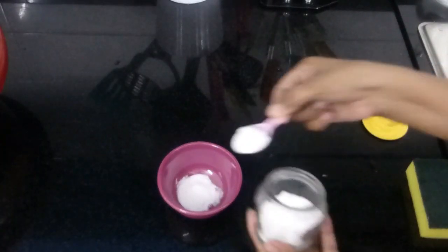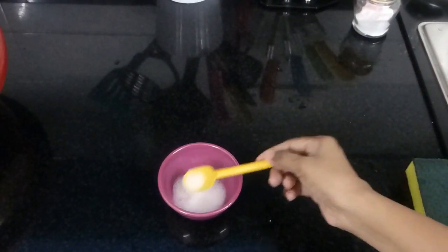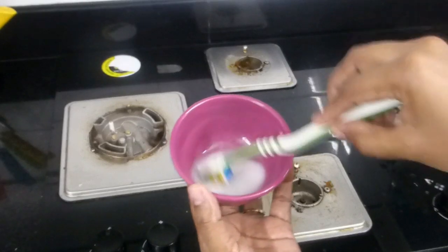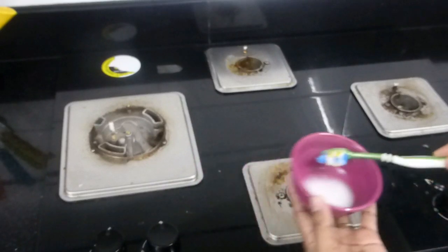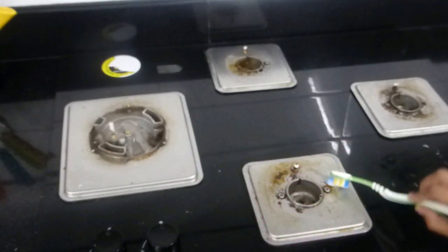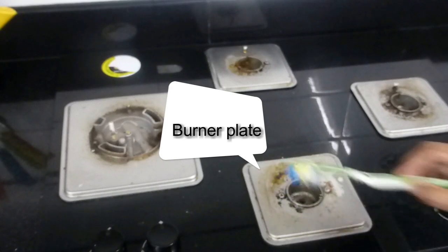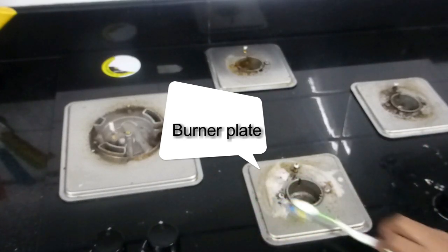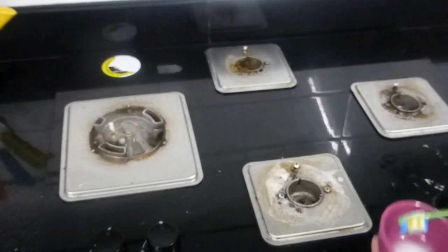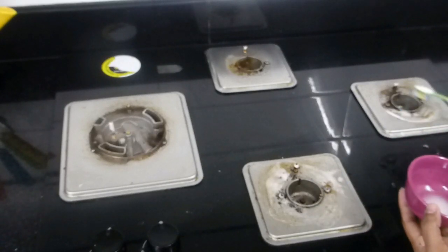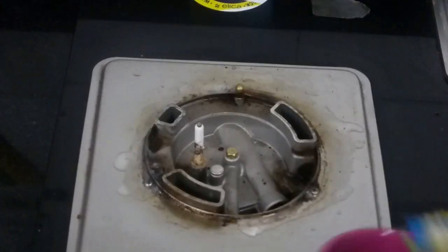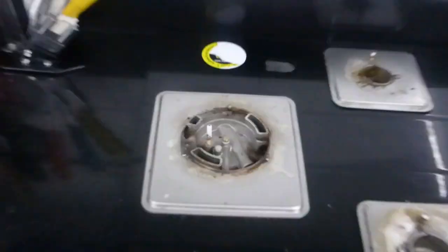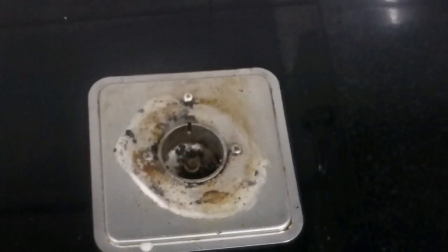And now take a bowl with 2 teaspoons of baking soda and just 1 teaspoon of vinegar just to make a paste like this and now using your toothbrush apply it on the burner plates. Inside the burner cup we are not going to apply, only you have to apply on the burner plates. So I am just going to apply on 4 burner plates and you have to leave just like this for at least 10 to 15 minutes. So in the meanwhile we will do cleaning inside the burner cups.